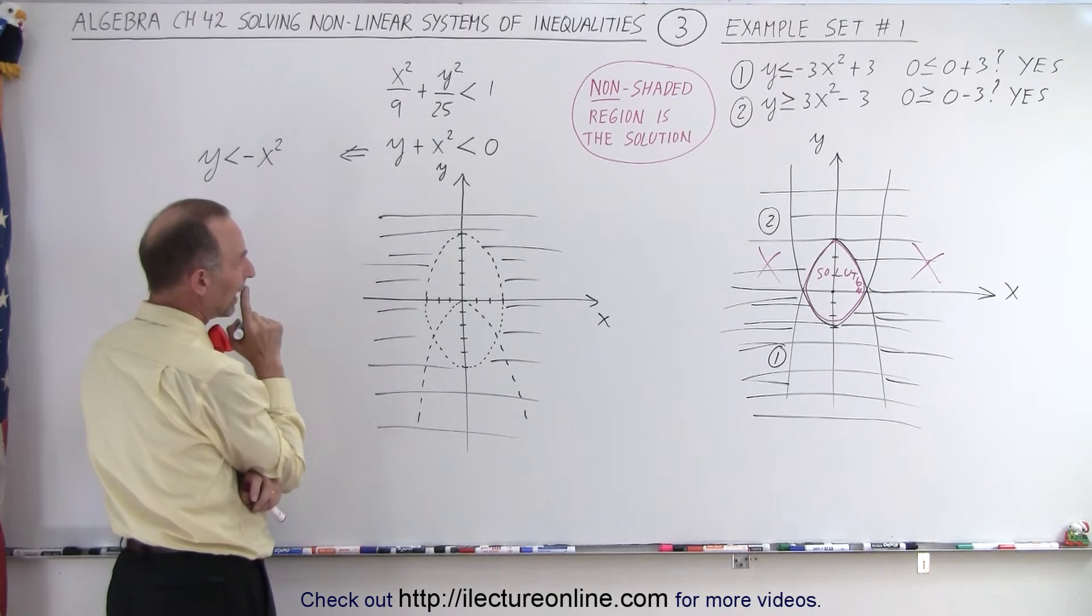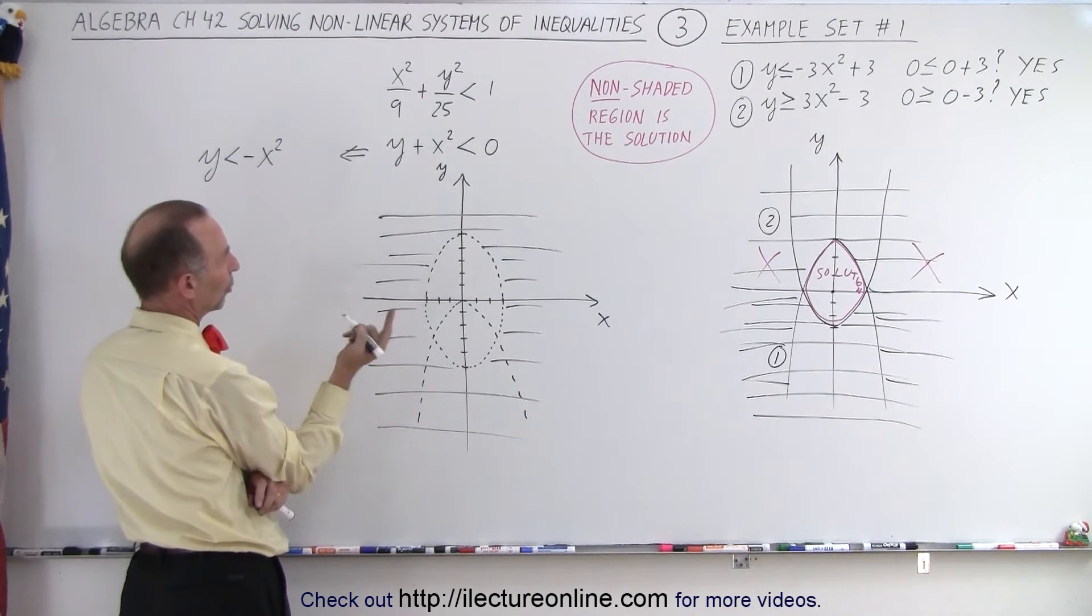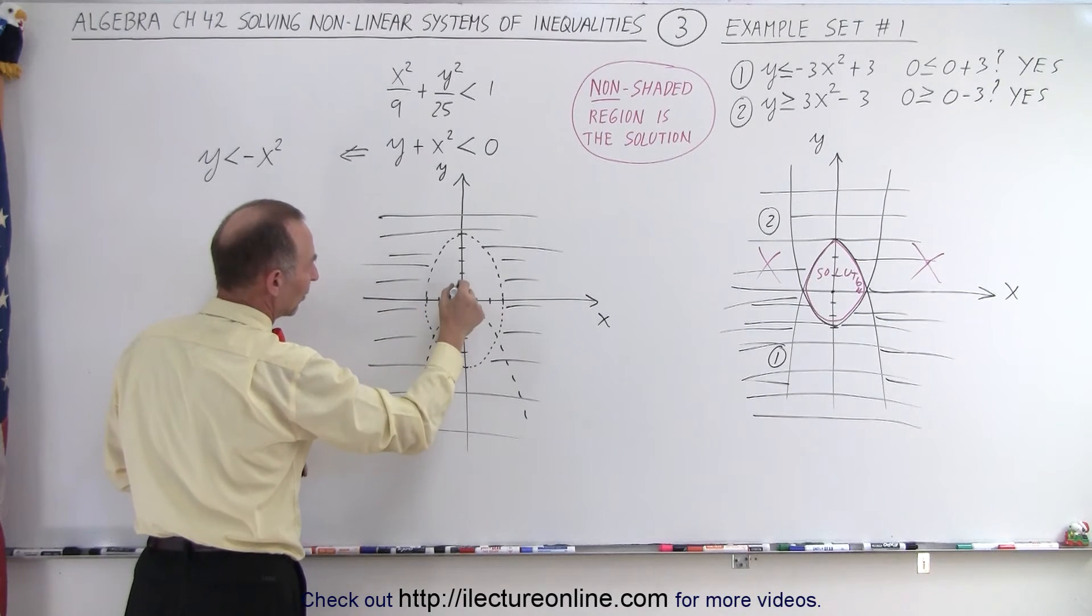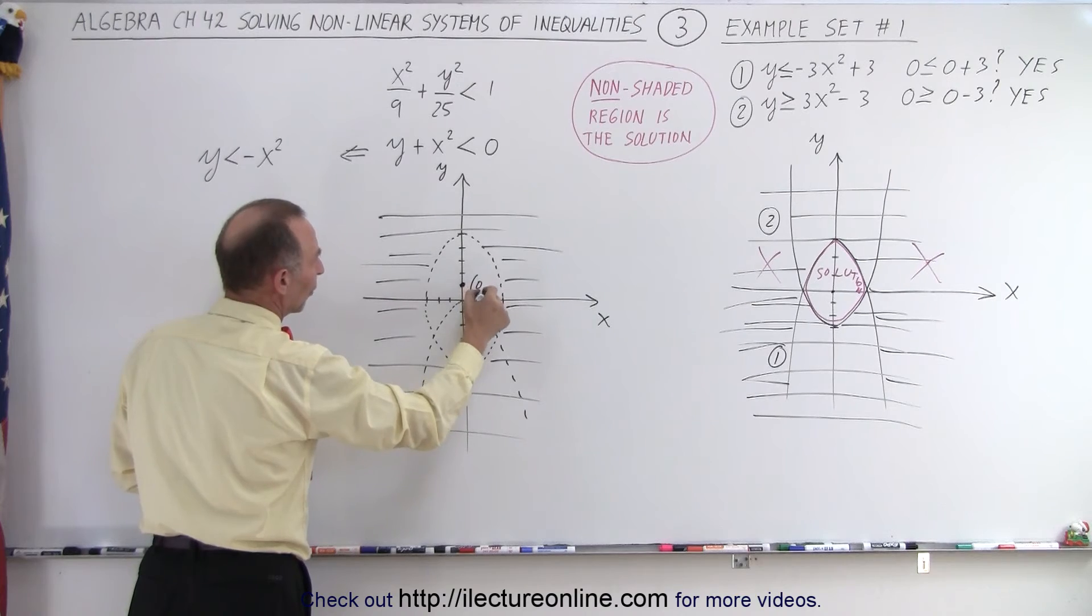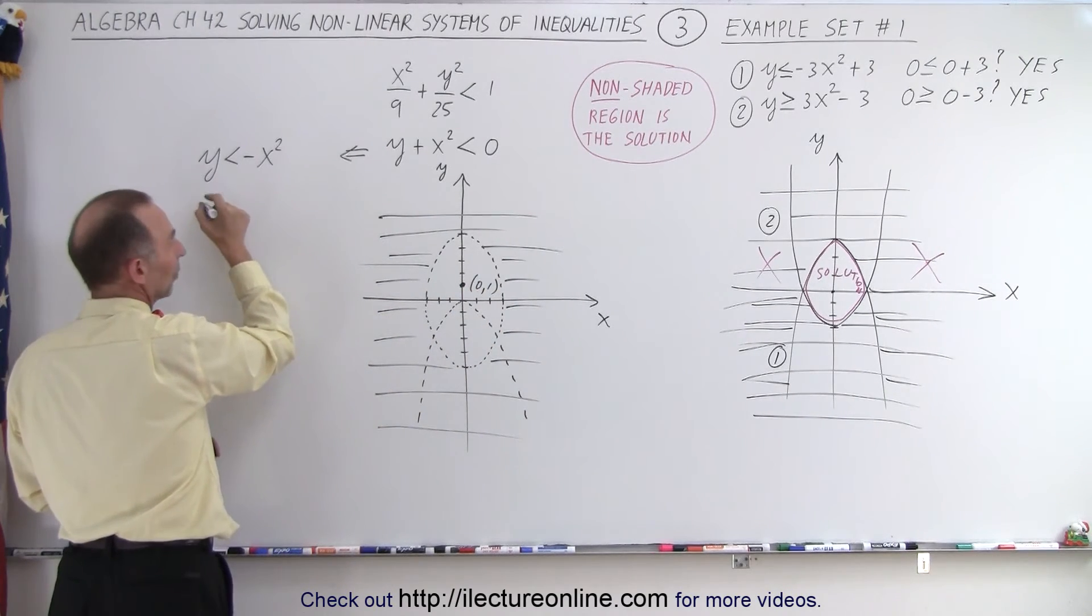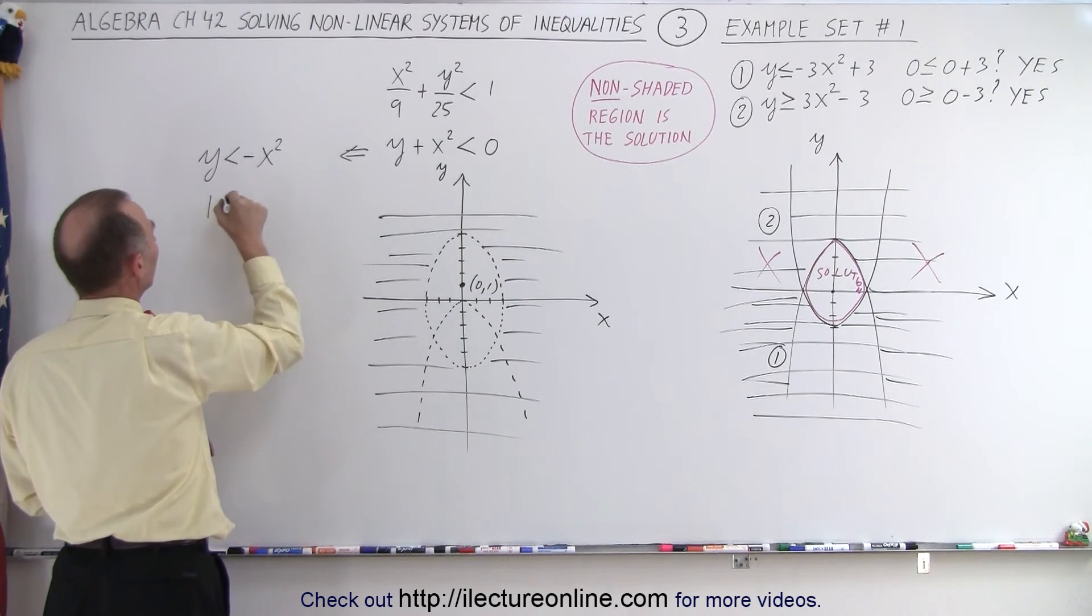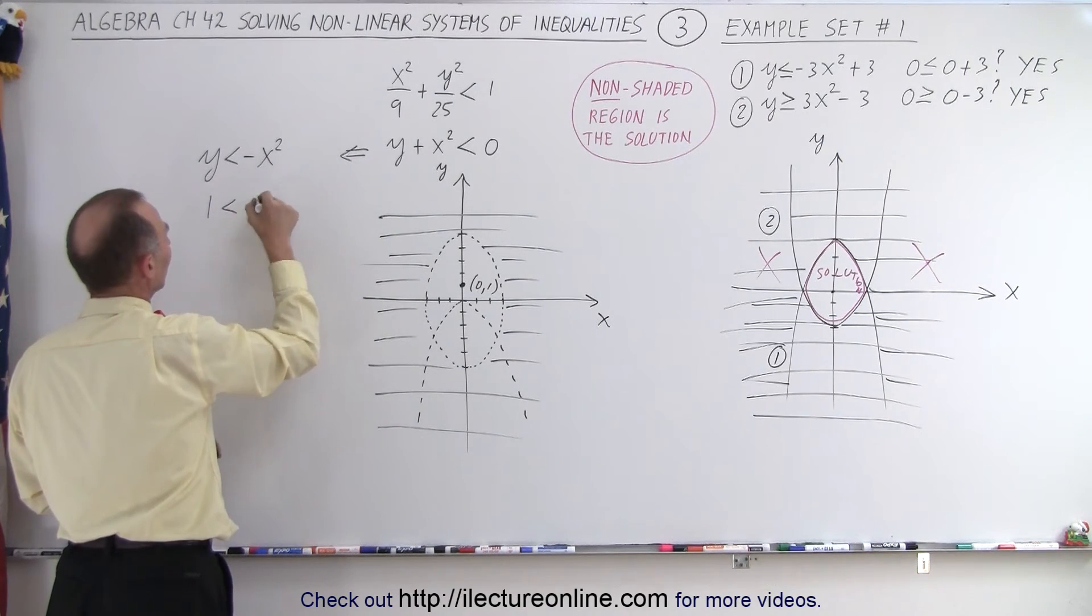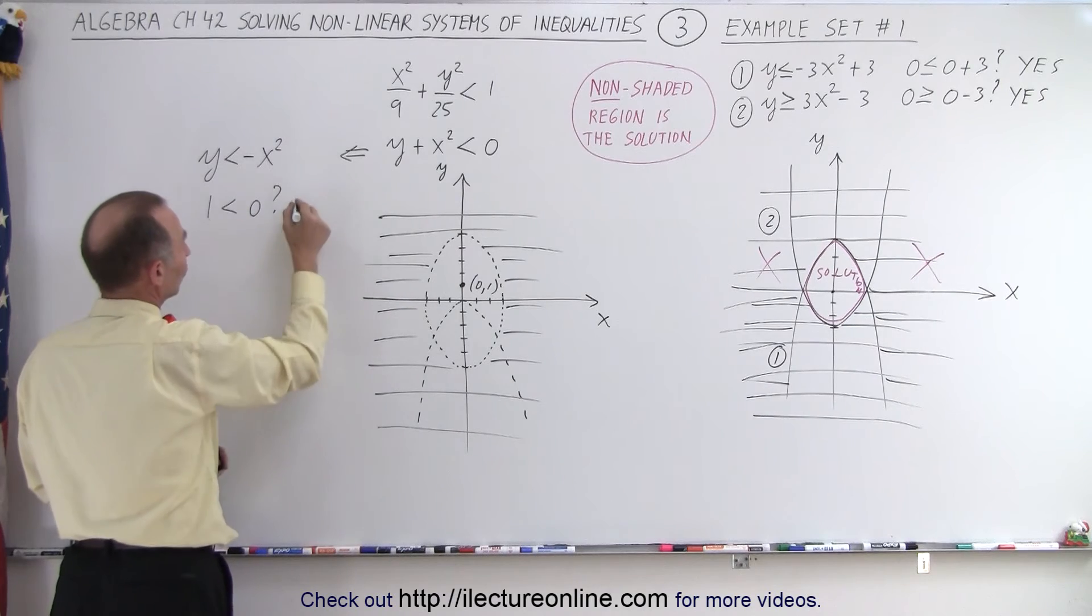And notice that we need to pick a test point. So a good test point to pick, maybe how about this one right here—is that a good test point? That's the test point (0,1). Let's plug that in here. So is zero for x and one for y—is 1 < 0, question mark?